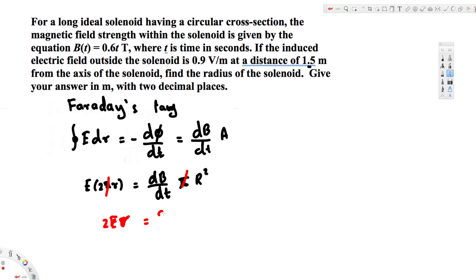Okay, so this is going to be 0.6 Tesla per second, so 0.6, and here we have r². R² is equal to this. Now let's rearrange this one: R² is going to be equal to 2Er divided by 0.6.